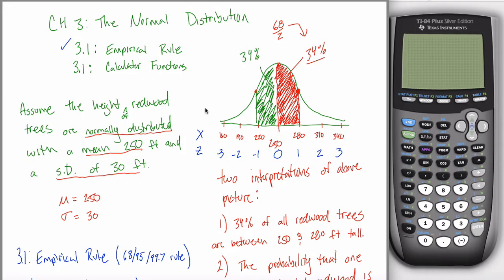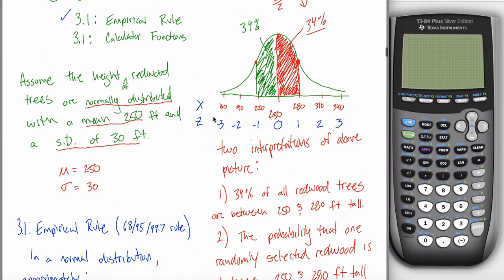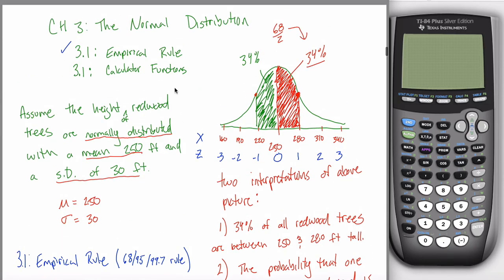A few videos ago we talked about how to make a picture — how to be given some information and turn it into a picture, and what that picture means. We spent quite a bit of time using the empirical rule to answer those questions and figure out how much area was shaded in a given region. Being comfortable with the picture itself is really important.